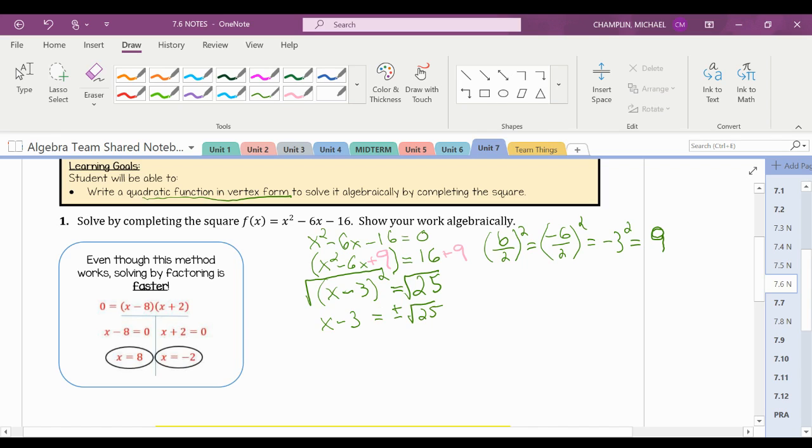Because it's plus or minus, because you can either have a positive times a positive equal 25, or you can have a negative times a negative still equal a positive 25. So you don't know officially which one is which.